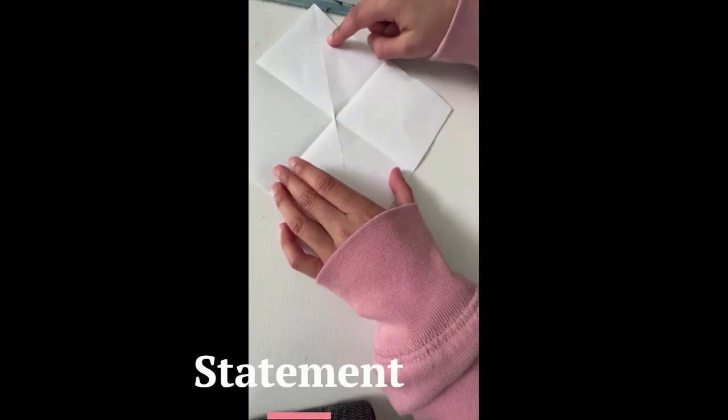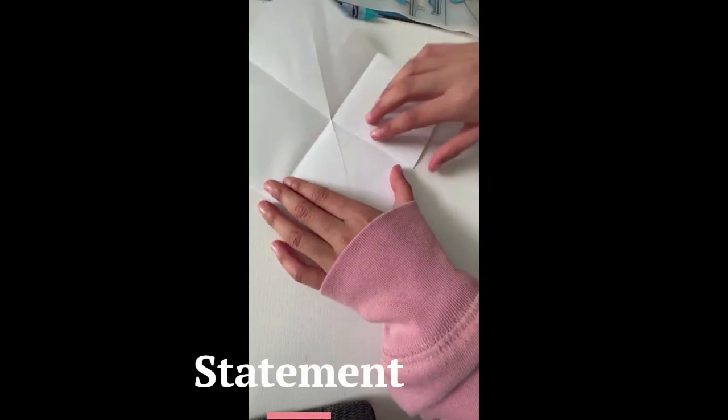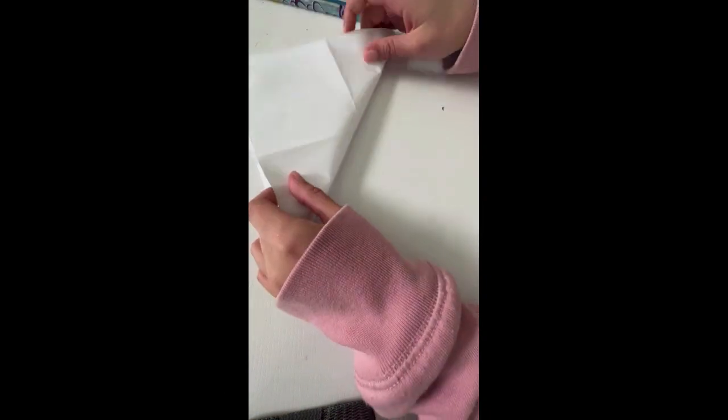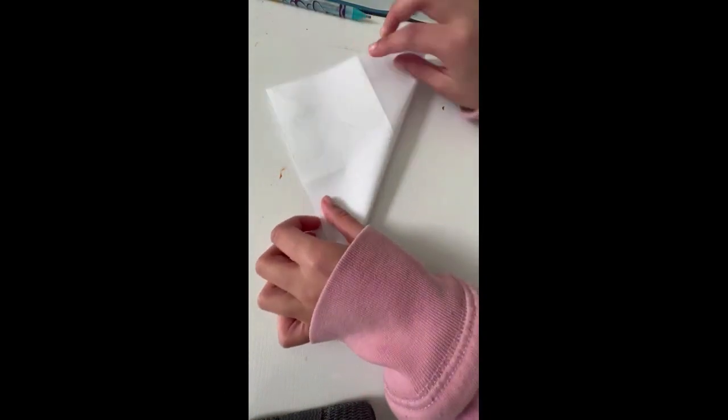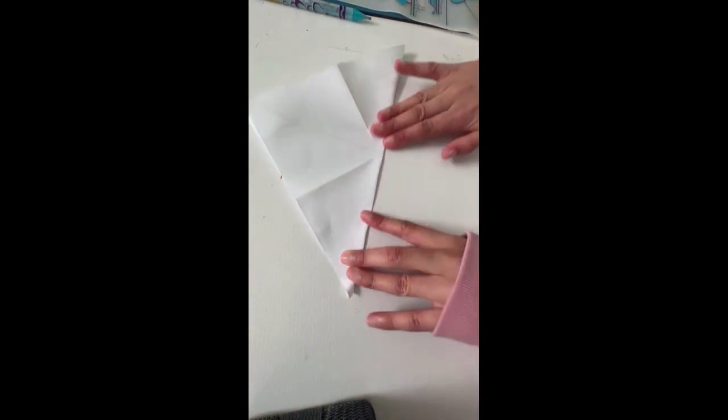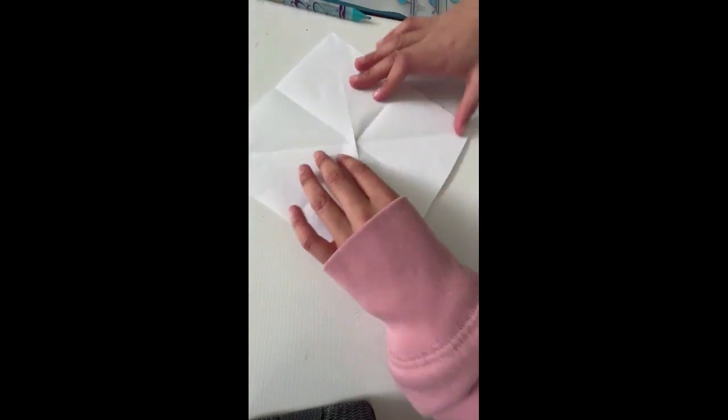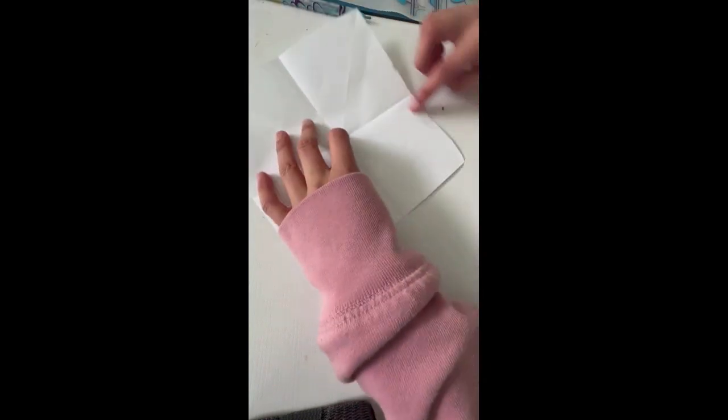And then I'm gonna fold it diagonally. Since this side is already folded diagonally, I'm gonna fold it diagonally the other way. Okay, so now you see you've got all these lines.